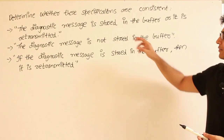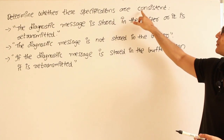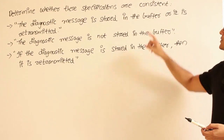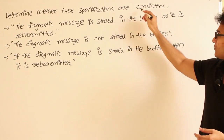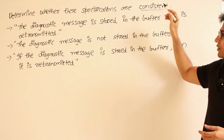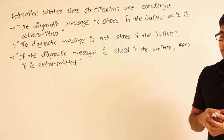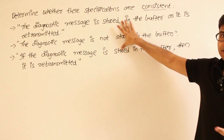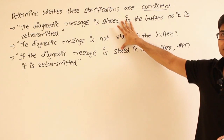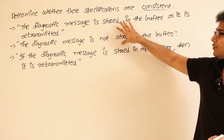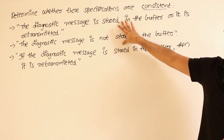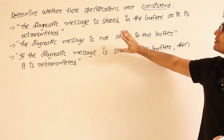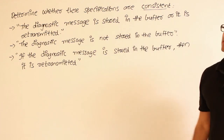See this question: determine whether the following specifications are consistent. Such questions can be asked in exams. What is consistent? If you try to build a system with all these specifications, that system should really exist.